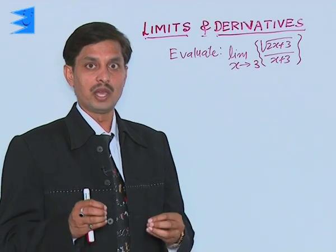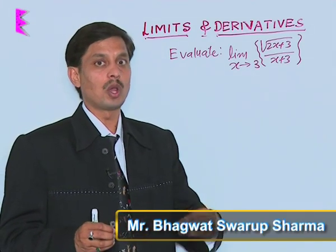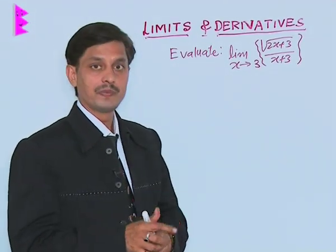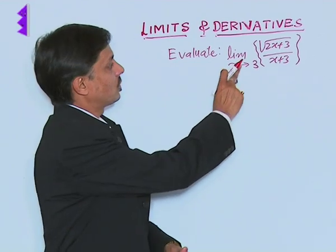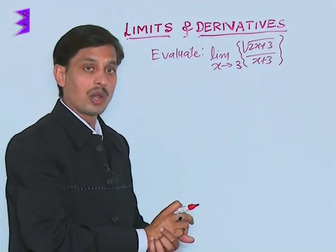I am taking a question where we will explain how to solve a problem related to limit. The problem is: limit x tending to 3 of the square root of 2x plus 3 upon x plus 3.